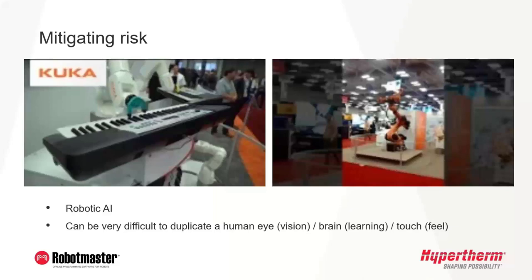There's certainly a lot of progress in robotic AI, with a lot of companies making some very good applications. But the reality is, it's still very difficult to duplicate the human eye, the brain, the touch and feel. So when you're looking at a manual process and what a person can do with their eye and their hand, sometimes that can be very difficult to automate. Robotic AI is solving some of these issues — we're making progress, but we're not there today. A couple examples: some entertainment applications like a robot playing piano, quite easy for a human to do, but to automate that process — the timing, the touch and feel of a human — it's very difficult to automate.